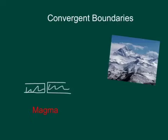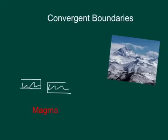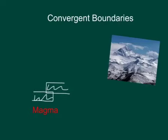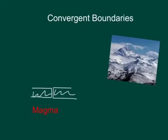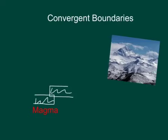Continental-oceanic subduction is a boundary where a continental and an oceanic plate converge together. The denser of the two, the oceanic plate, will move underneath the less dense continental plate. As they do that, they'll catch and slip and cause earthquakes. And when they're going down, magma will seep up through here and cause volcanoes to form.